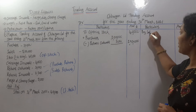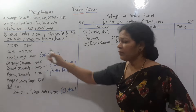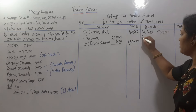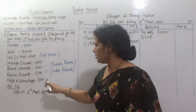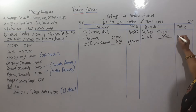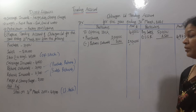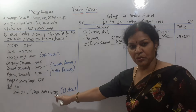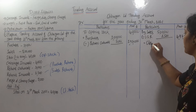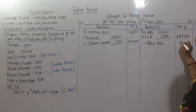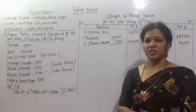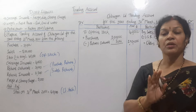On the credit side, the first item is sales. We also have sales returns. Sales are 5 lakh, minus sales returns of 2,500, giving us 4 lakh 97 thousand 500 (₹4,97,500). The second credit item is closing stock from the additional information, which is 42,000. The 4th item — direct expenses — is noted in the debit side.